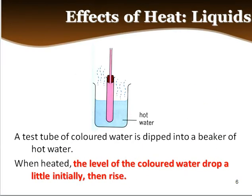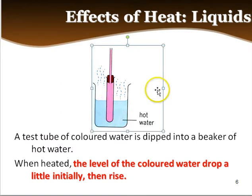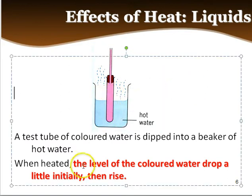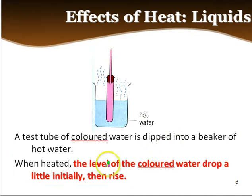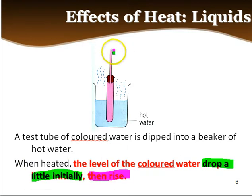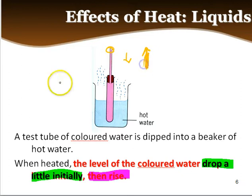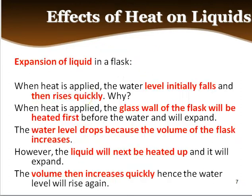Next, we talk about liquid. When we have a tube with hot colored water — you can see the hot water is causing the liquid inside to expand. Take note: the level of colored water drops a little initially, and then it rises. So the water level goes down first, then comes up eventually.